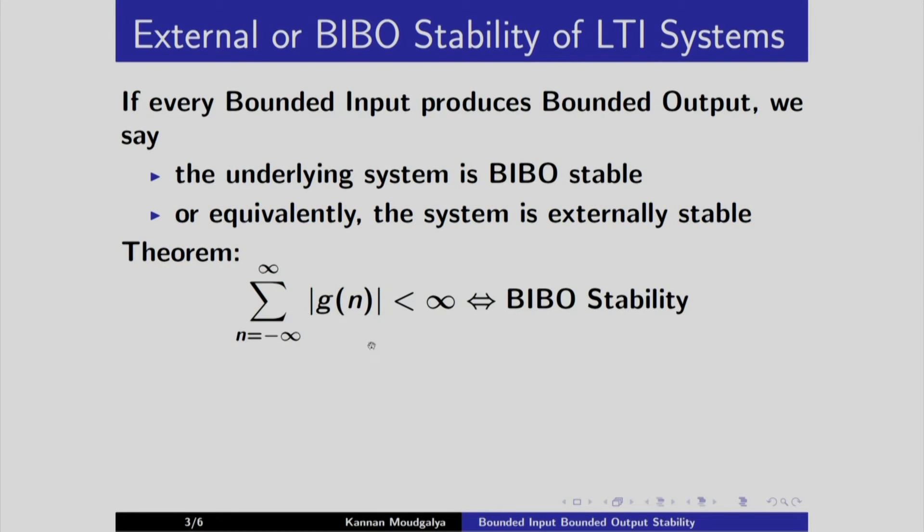Here is the theorem. If the absolute sum of impulse response is bounded, the system is BIBO stable. As a matter of fact, we have to show both directions. We will prove as follows. We will first assume that it is bounded, then we will conclude that the system is BIBO stable.